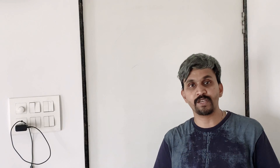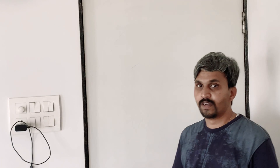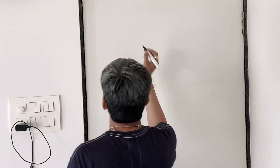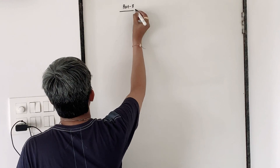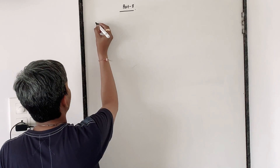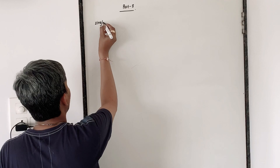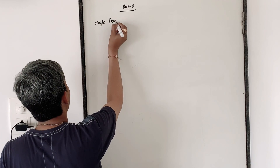Hi friends, this is Prashant. Today we are going to start with Chapter 3, Part B, that is Machines Part B, in which we are studying different types of pulleys, pulley systems, and block and tackle systems of pulleys. We will start with Part B, in which we are studying first: the single fixed pulley.